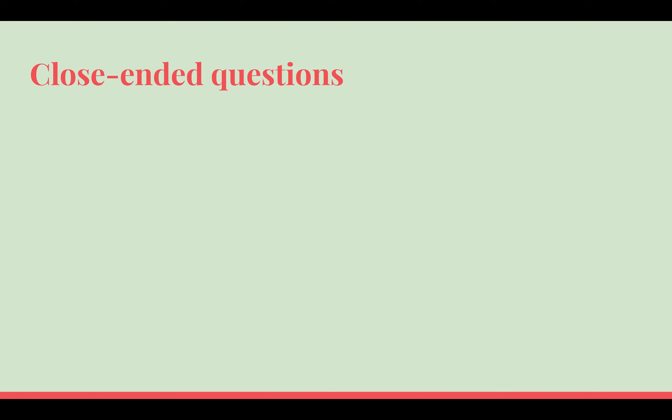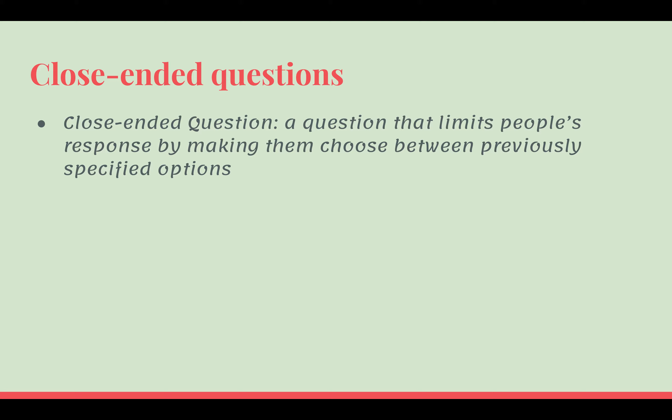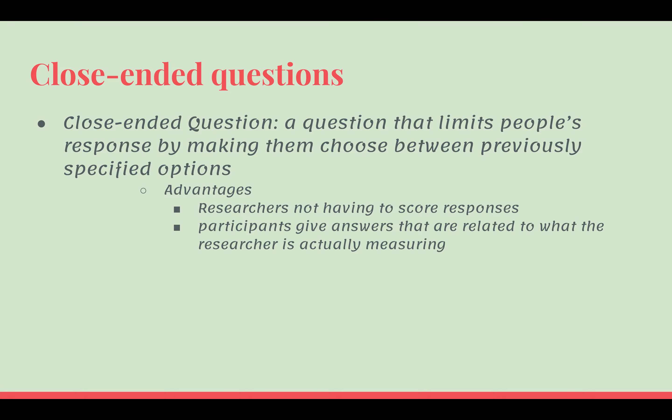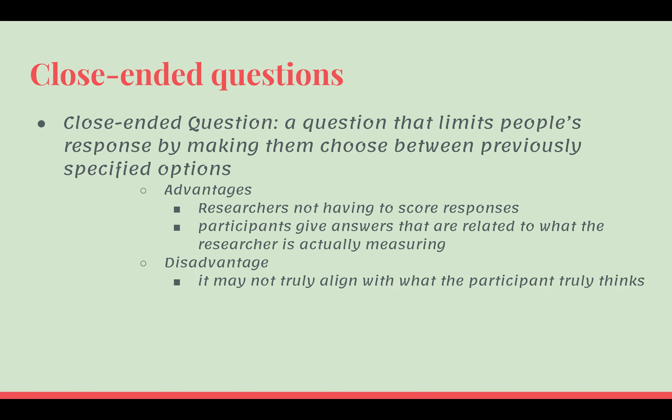On the other hand, we have a close-ended question. A close-ended question is a question that limits people's response by making them choose between previously specified options, such as yes or no. For example, a researcher asks a group of participants which color they prefer the most, but only gives them red, blue, and yellow as possible answers. This has numerous advantages such as not having to score responses and participants give answers that are related to what the researcher is actually measuring. But it has a major disadvantage in the fact that it may not truly align with what the participant truly thinks.